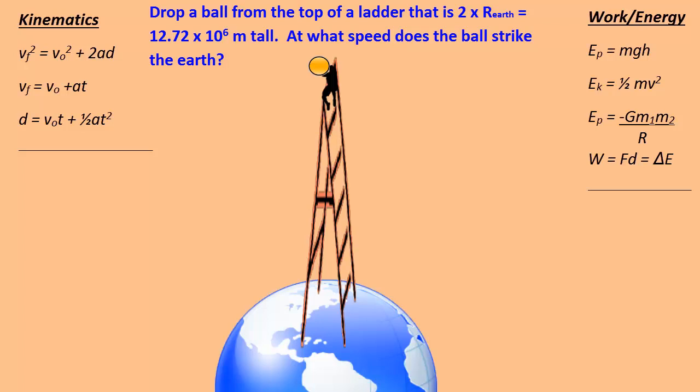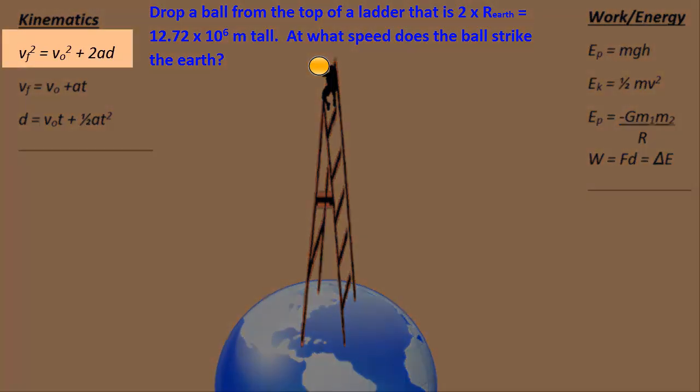Now once again, the ball starts at the top of the ladder, and as we drop the ball, we know it's going to start to accelerate towards the Earth. So if we were to use kinematics, once again we would focus on our first equation, where v initial is zero, and d in this case is two times the radius of the Earth, or 12.72 times 10 to the 6 meters.